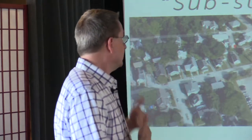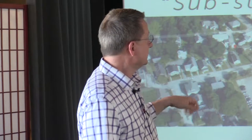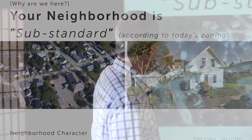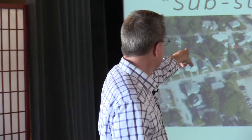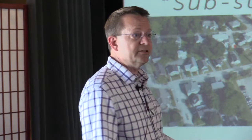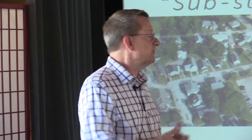We went back and looked at the character of places. This particular place is zoned RN today, but it does not meet today's requirements. And yet if we look at the neighborhood and ask ourselves whether that little white house just to the left of the blue tarp fits into the neighborhood — it looks like it fits in pretty well. So we need to match the rules back to the fabric of the community. That's a big piece of this exercise.